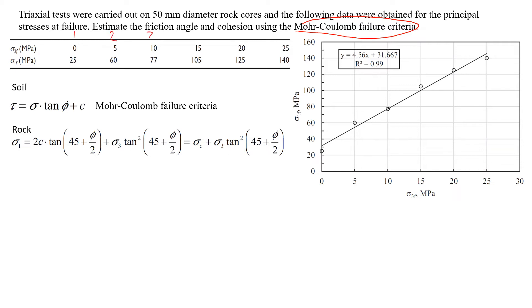So we have six sets of data from six tests and they are presented in the table. So what we need to find is friction angle and cohesion using the Mohr-Coulomb failure criteria.